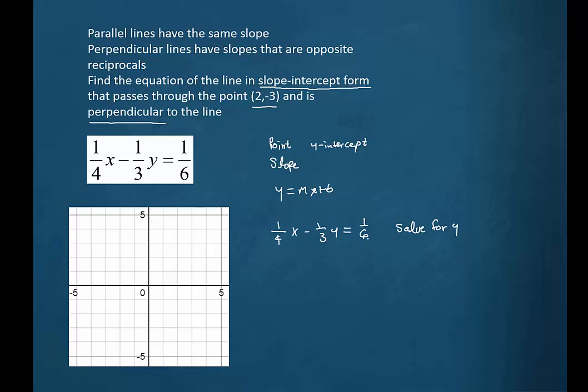We could multiply both sides by 12. That would make it pretty convenient because we could cancel all of the fractions if we did that. So we'd have 3x minus 4y equals 2. Now we could subtract 3x from both sides and we would have minus 4y equals minus 3x plus 2. Then divide both sides by minus 4.